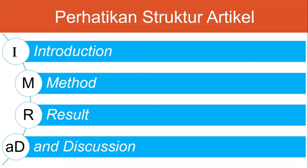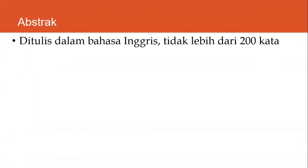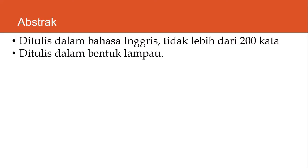Di dalam sebuah artikel pasti ada judul, lalu kemudian ada abstrak. Abstrak itu ditulis dalam bahasa Inggris, ada beberapa jurnal berbahasa Indonesia — tergantung gaya selingkung dari jurnal yang kita tuju. Umumnya abstrak tidak lebih dari 200 kata, ada yang tidak lebih dari 300 kata, kembali kepada gaya selingkung dari setiap jurnal. Abstrak ditulis dalam bentuk lampau.